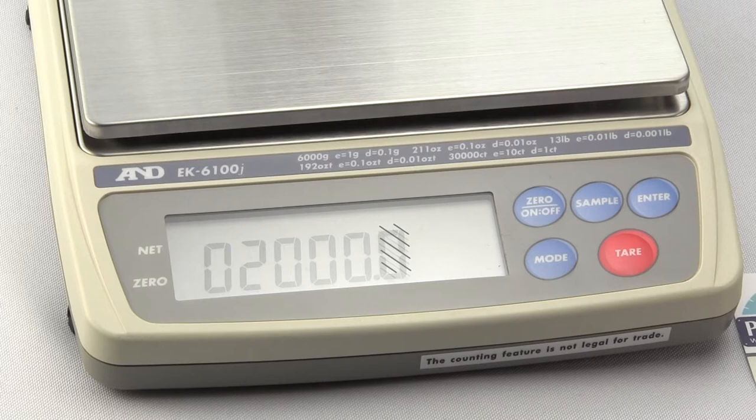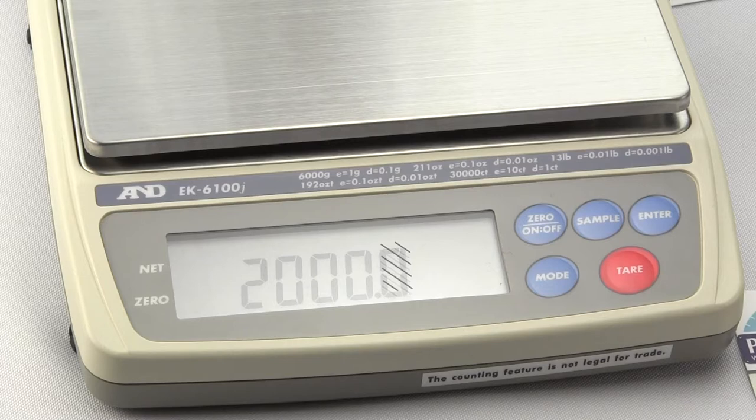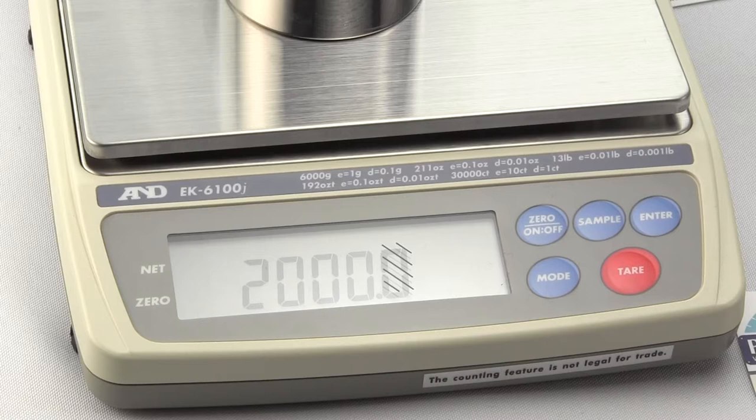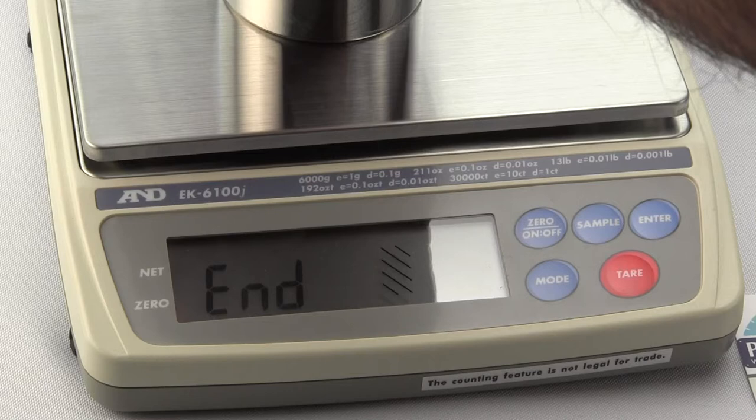It goes back to CAL 0. We hit the ENTER key. Stores the value with no weight on the platform. Now it flashes 2,000. Put a 2,000 gram weight in the center of the platform. Press the ENTER key. It stores that value. END comes up. We remove the weight from the platform. Hit the MODE key.